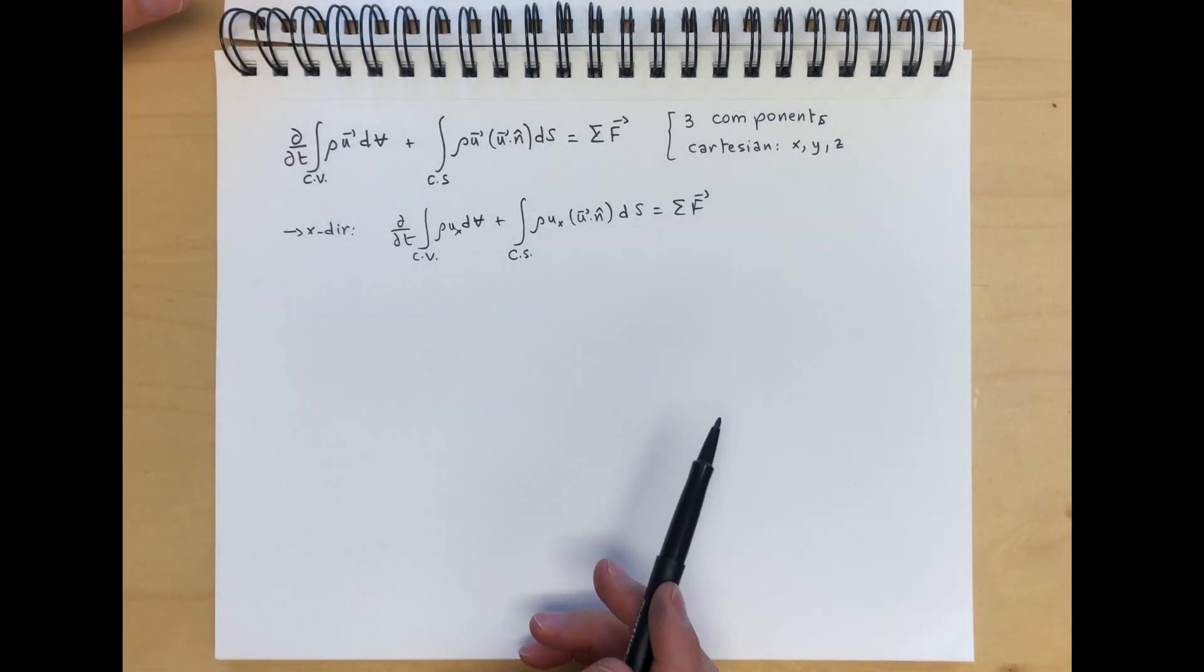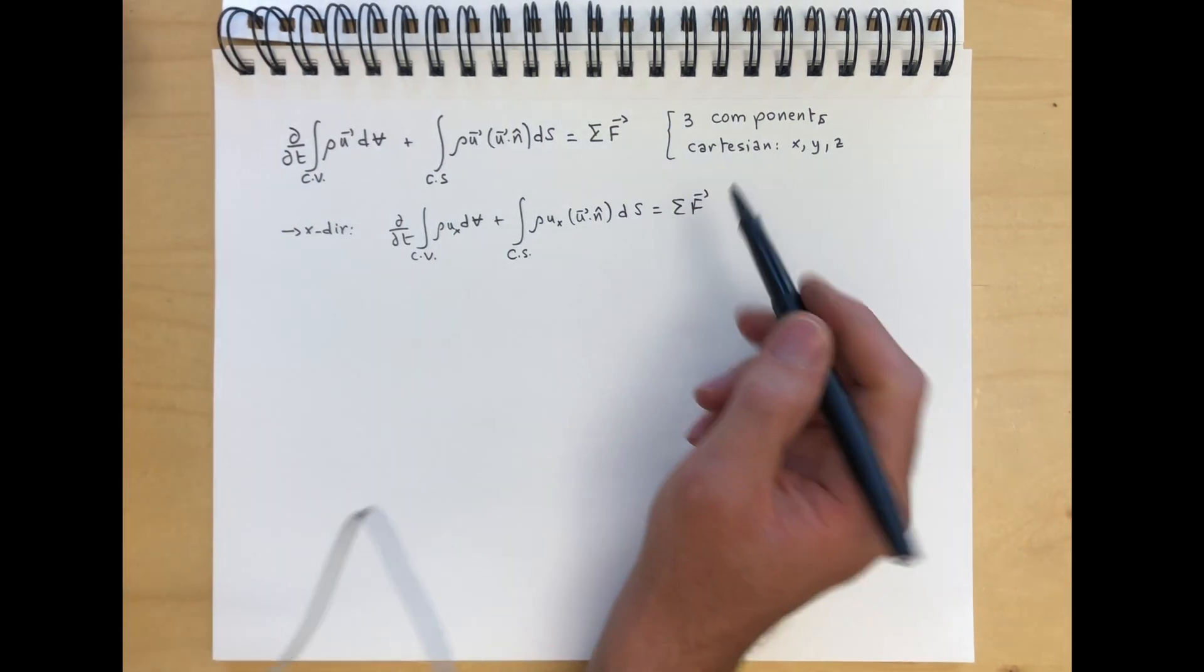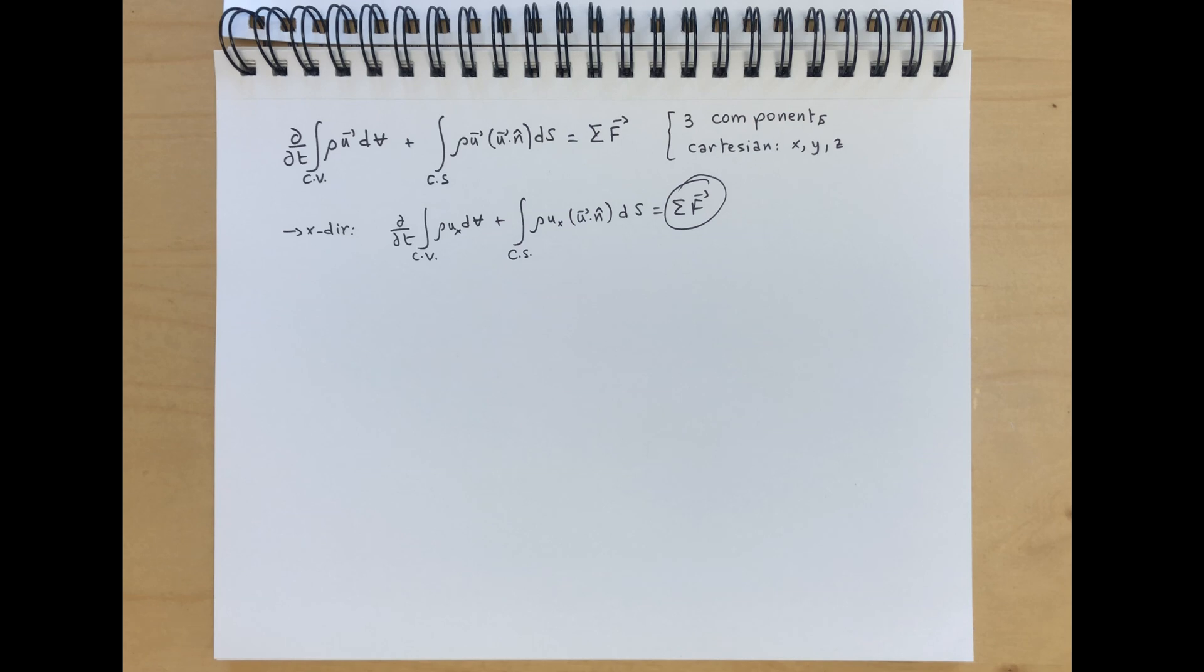This is great so far, but what we did not talk about yet is the meaning of this summation of forces. Right now, we're thinking that these are forces that are just external to the fluid, or if your control volume cuts through the fluid, there will be internal forces exerted by the remainder of the fluid on the fluid itself.